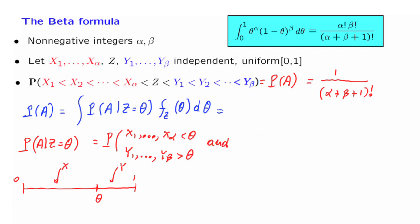And also, not just that, but the X's are sorted and the Y's are sorted as well. Clearly, if I give you the value of theta so that Z is equal to theta, for this event to happen, we must have all these events here happen as well. So now, let us try to calculate the probability of this event.